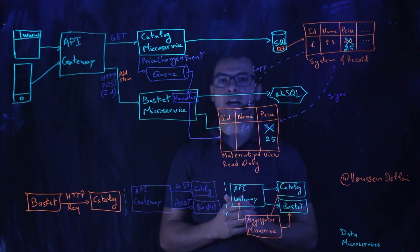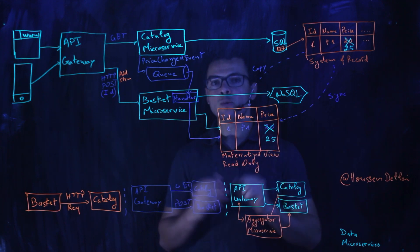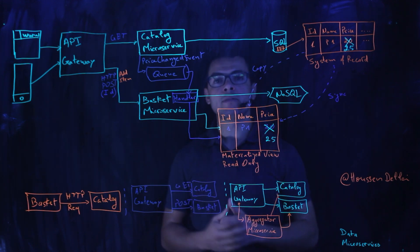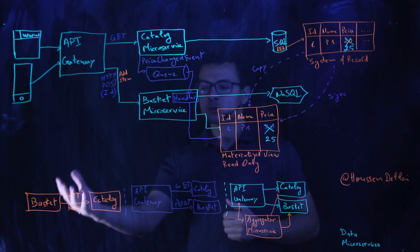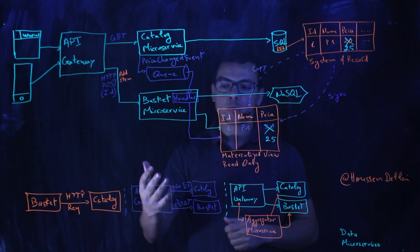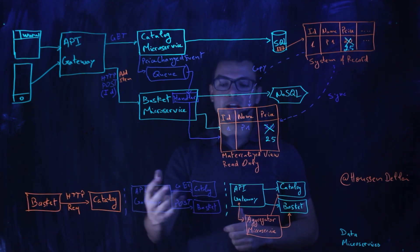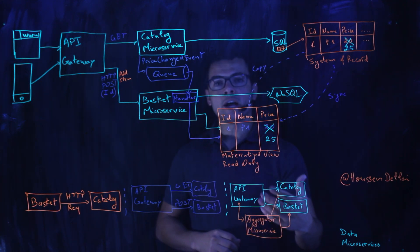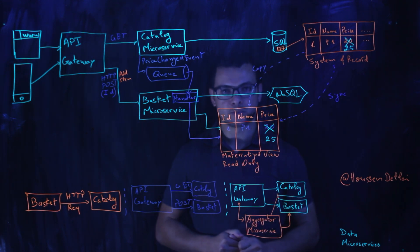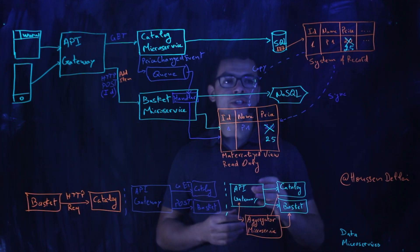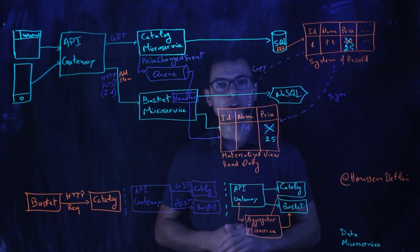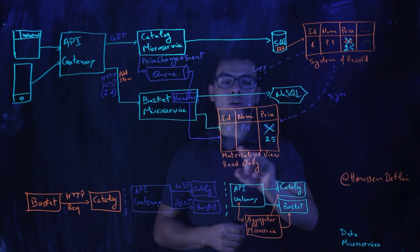Working with data in a microservices architecture can be really challenging. Let's take the use case of microservice A that wants to get data from microservice B. We would have four different approaches to solve this problem. The easiest one is a direct HTTP request from A to B. We can also use an API Gateway to aggregate the request, create an aggregator microservice for that data aggregation, or option four: creating copies of the data — having one system of records and a materialized view.